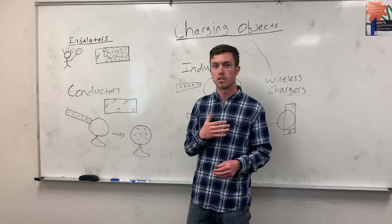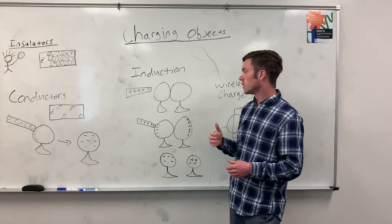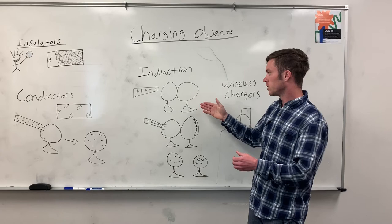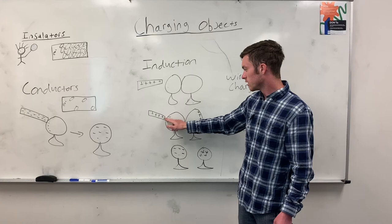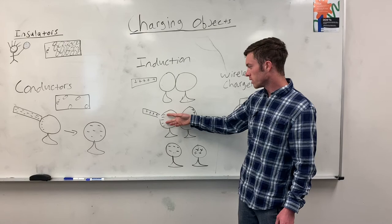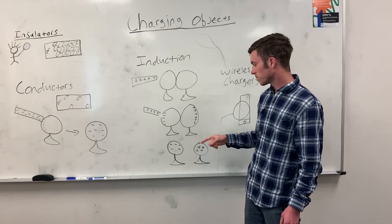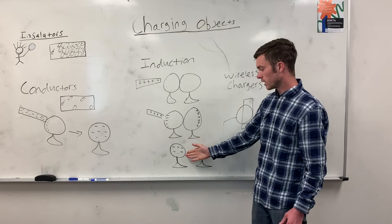The next type of way to put charges is something called induction. This is an example of induction. We will bring two conductors together and then we will bring a charged object close by. We never, we don't touch it, but we just bring it close by. And as you can see, it pulls these negative charges over. And because of this positive charge, it attracts them. And then once these negative charges are over, we can separate the two. And now this object has a negative charge and a positive charge.